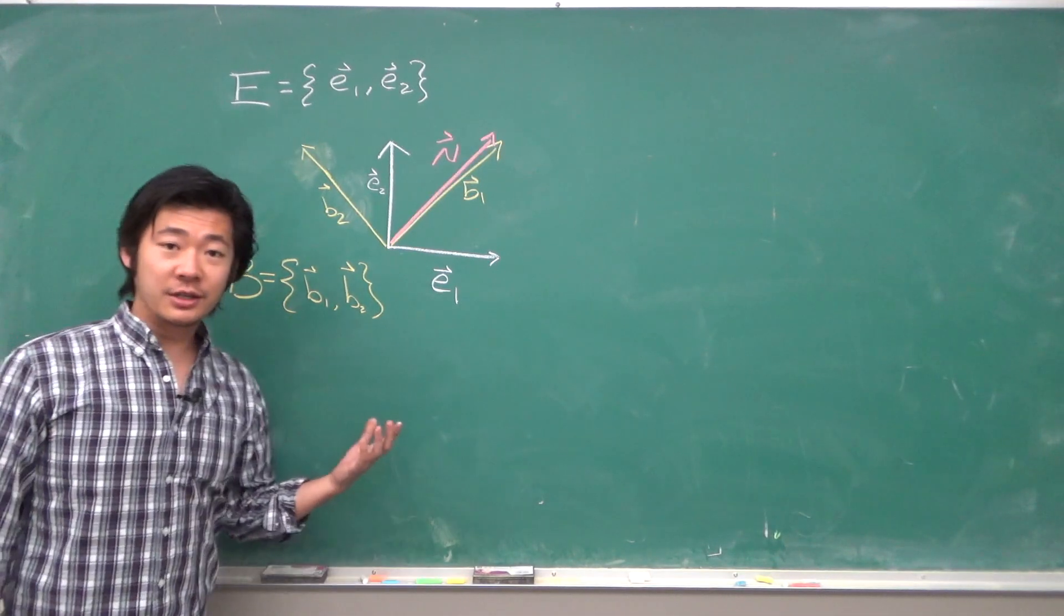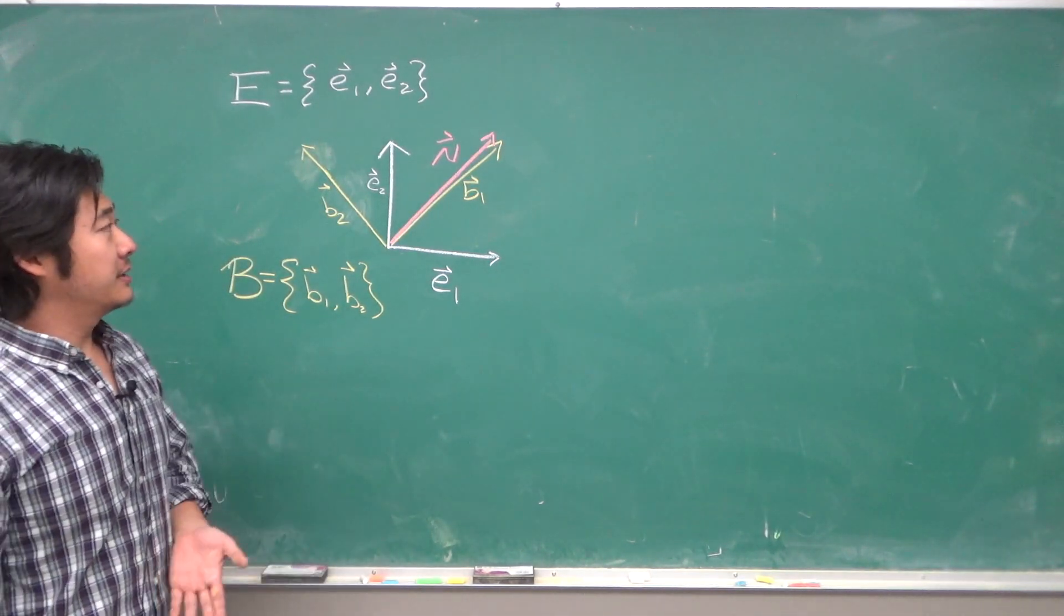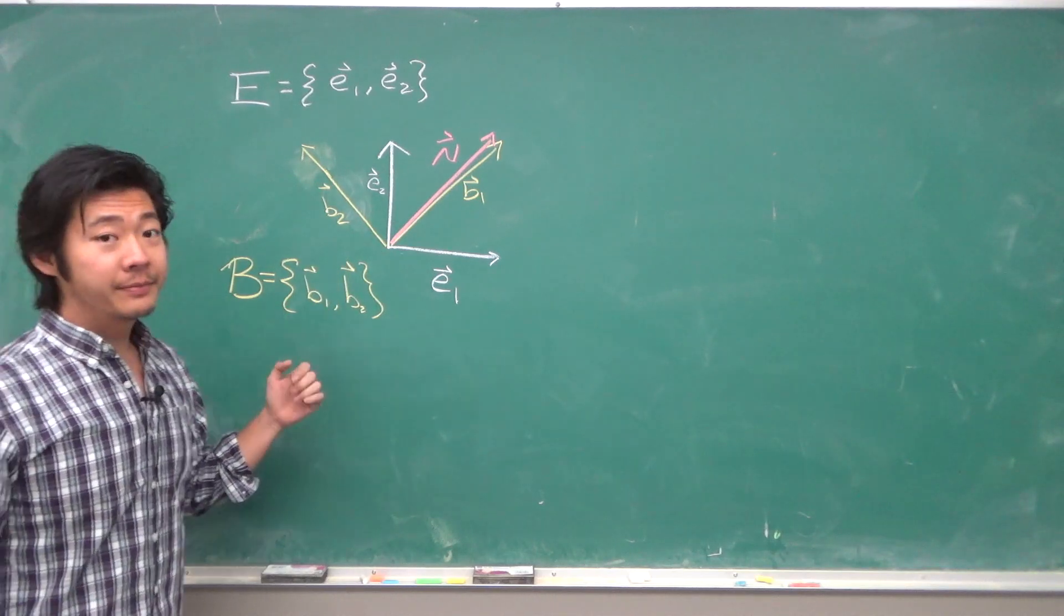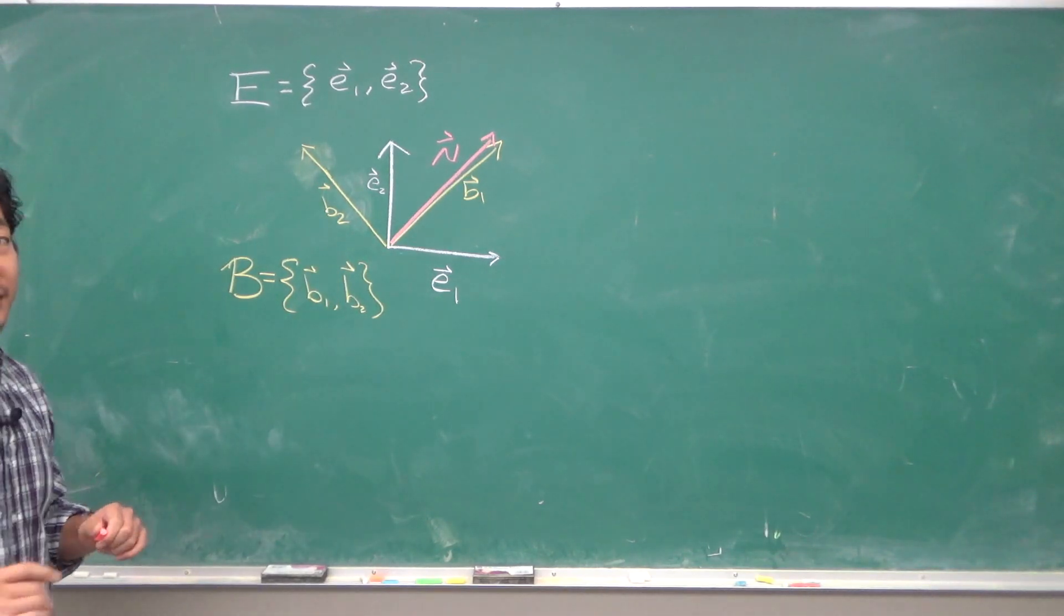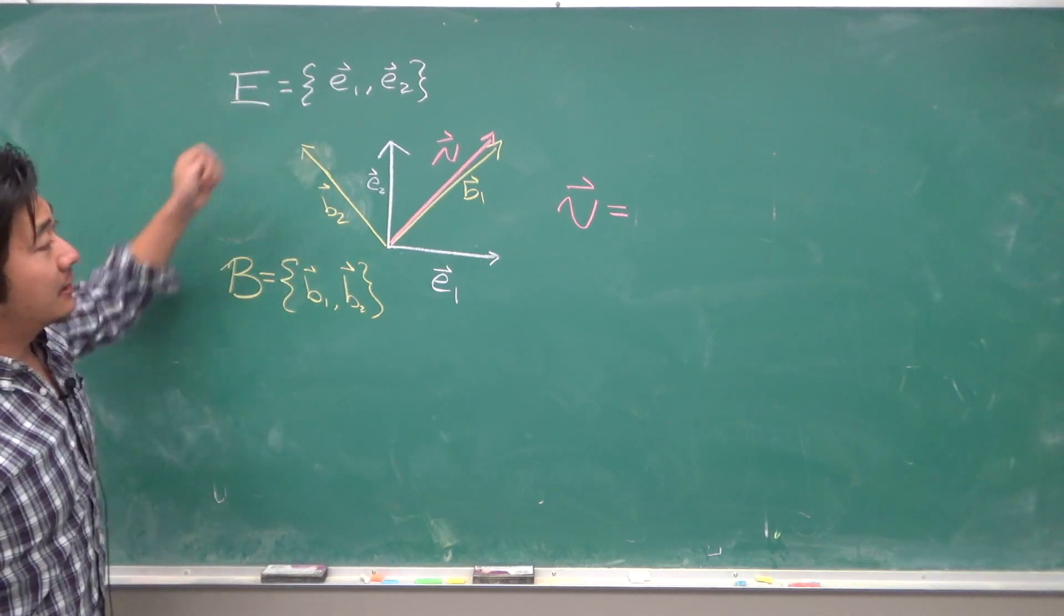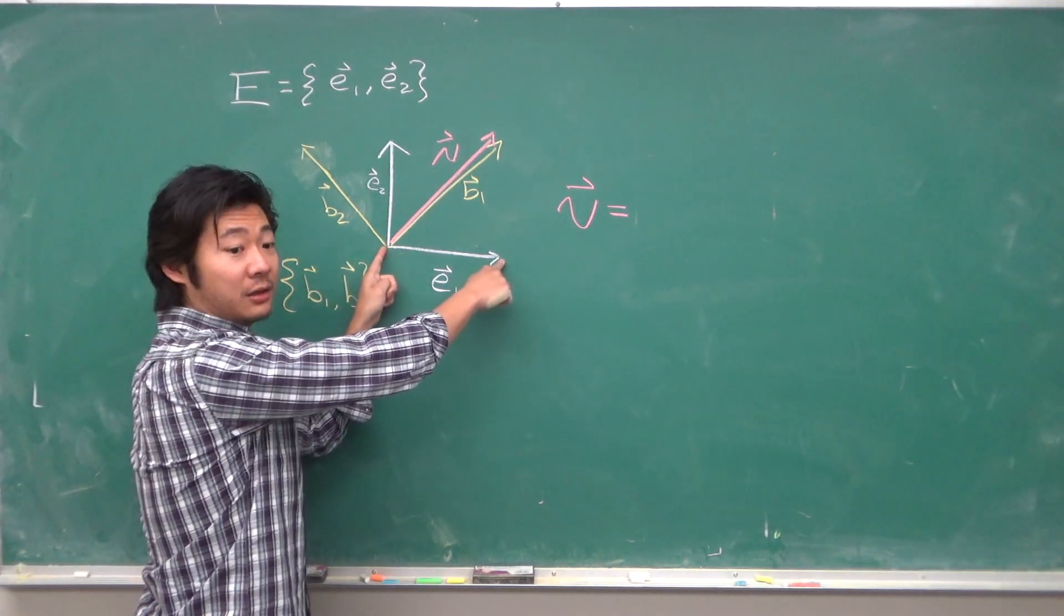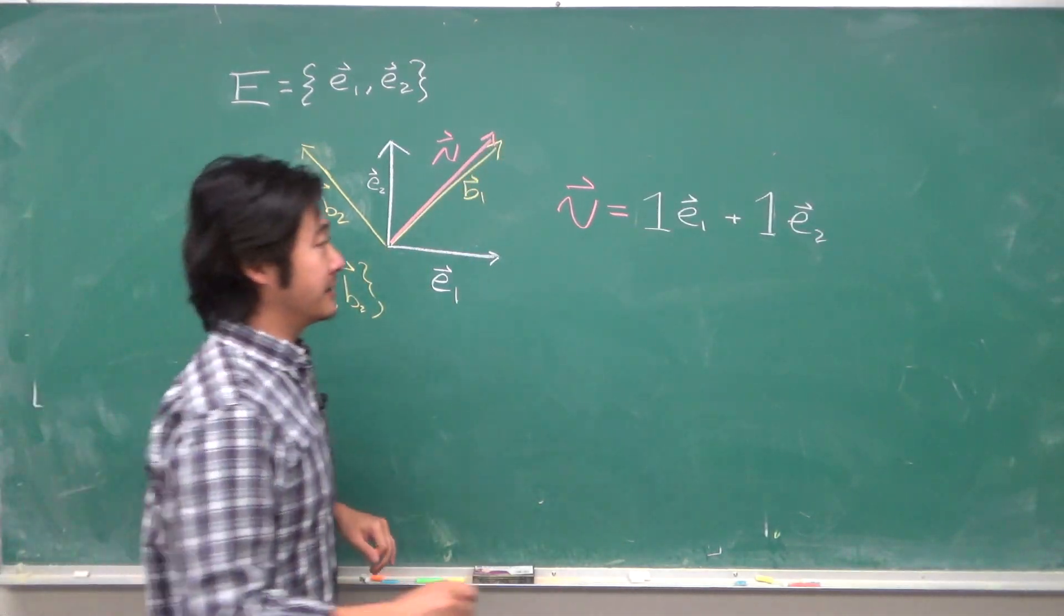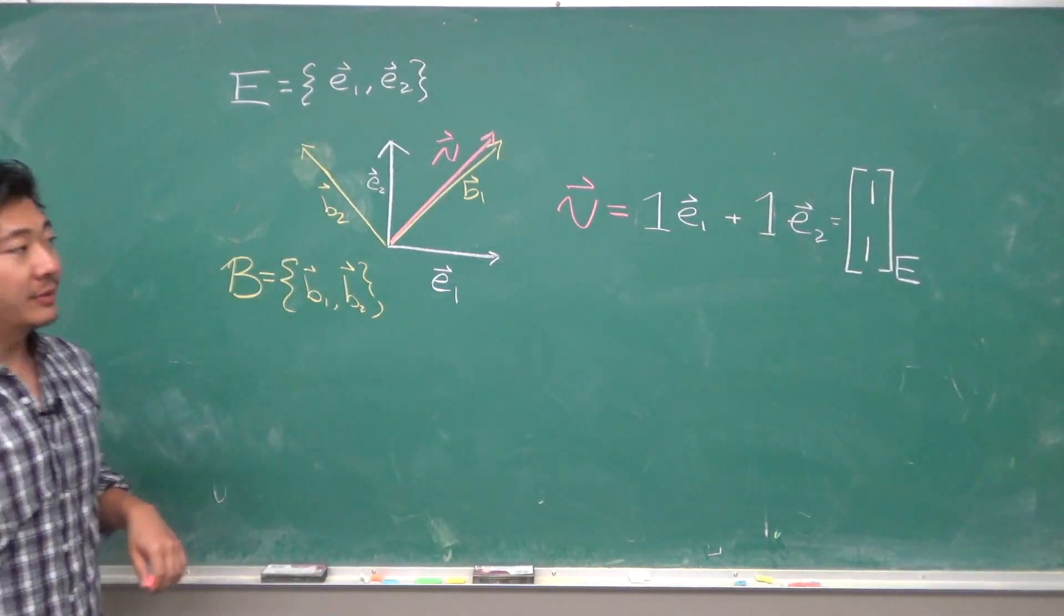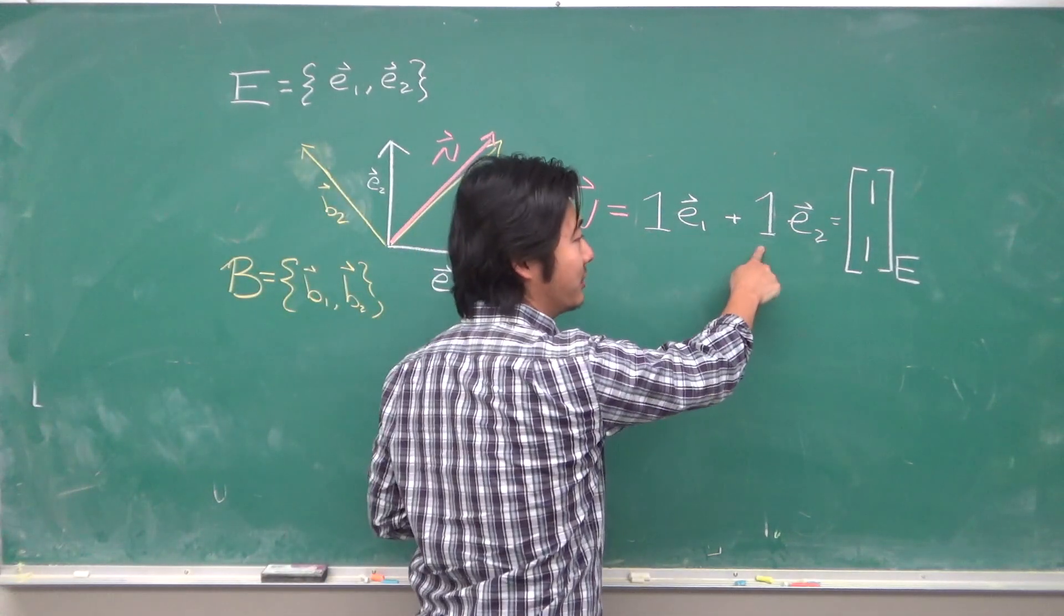So let's just consider this vector, let's say, V. Then, how can you describe V in either of the bases? In the basis E, it goes one unit in the E1 direction and one unit in the E2 direction. So we would write this as 1, 1, because there's 1, and there's 1.